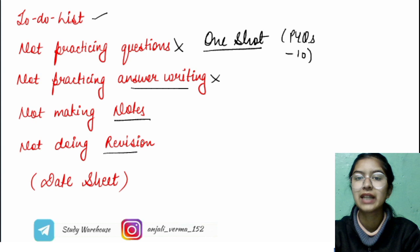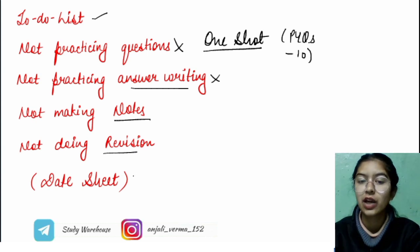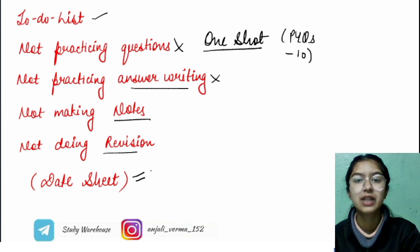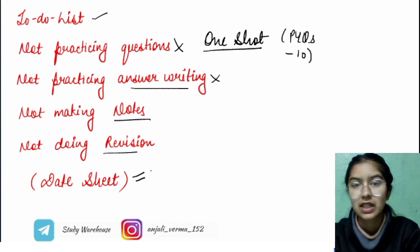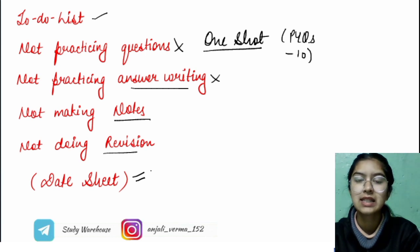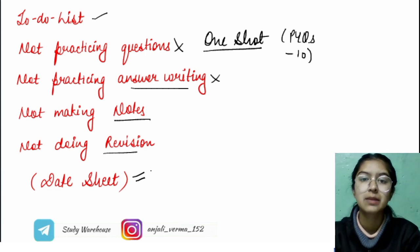According to your date sheet, make your entire timetable. Check which subject has more gap - maybe you can do one more chapter there. If there's less gap, focus on that subject accordingly. Analyze all these things and divide your syllabus based on how many questions need to be practiced.